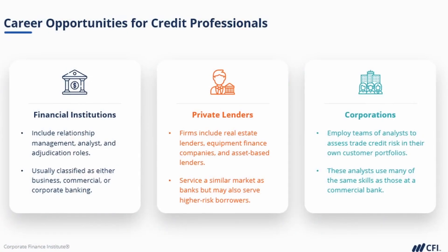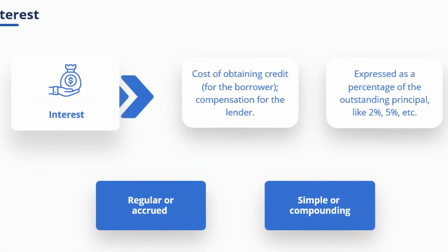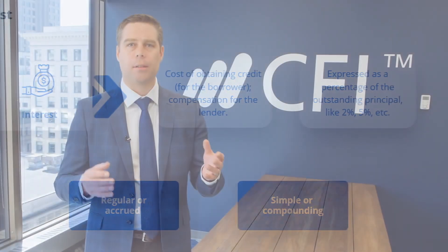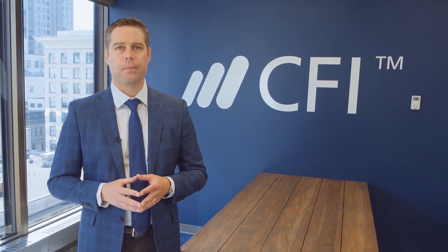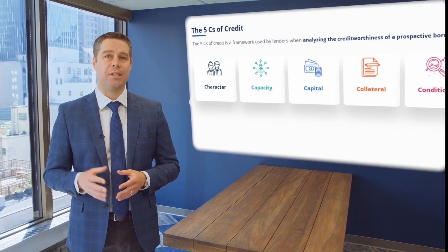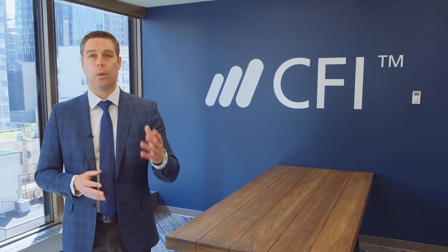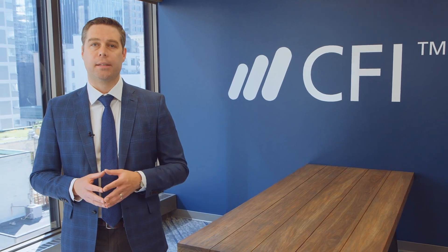In this course, we'll start by looking at what credit is and how it's created. We'll explore some of the different career opportunities available to credit professionals. Then we'll compare different types of interest payments and loan characteristics to better understand what credit structure is. Next, we'll look at what capital expenditure or CAPEX is and how debt financing is used to support it, before covering the five C's of credit framework and how it informs risk assessments. And finally, we'll identify the important qualitative and quantitative techniques, including key financial ratios, that are used in the analysis and underwriting process.